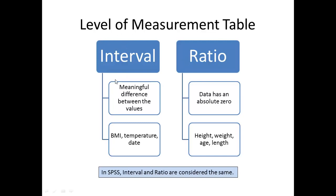With interval level and ratio level, the distance between the data points has meaning. We can use the more robust parametric tests like t-test, ANOVA, MANOVA, regression, and types of correlation. Interpretation of results is more reliable. We select interval and ratio level variables whenever appropriate and possible. Interval and ratio level data are treated the same in most statistical tests, and this data is represented as measures of central tendency used in descriptive statistics.